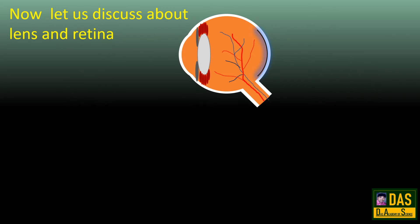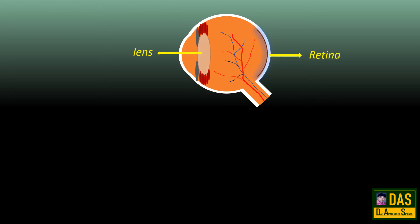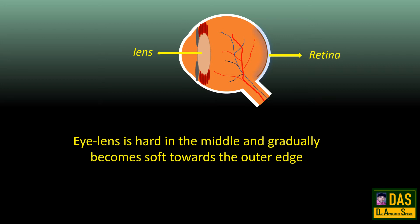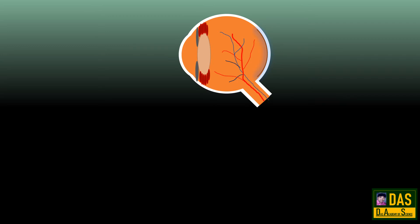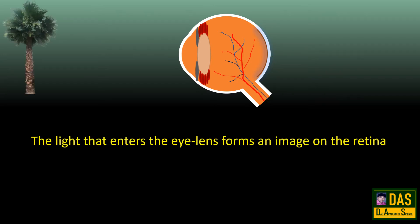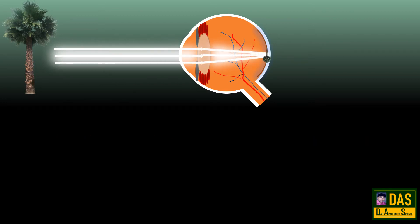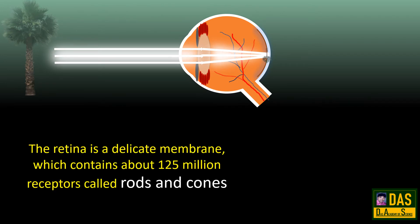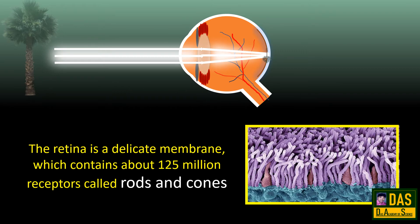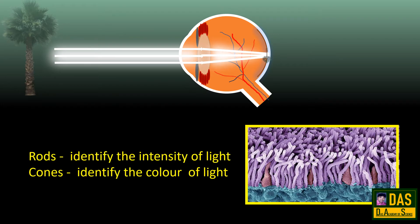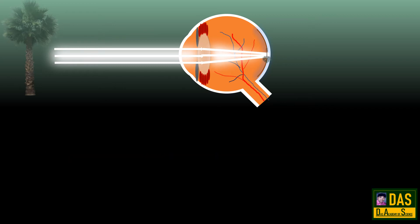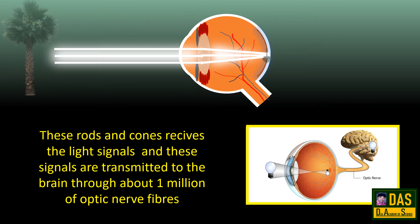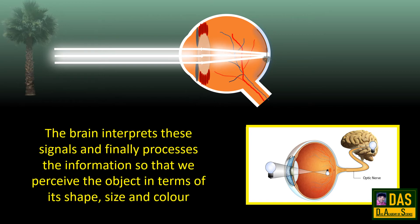Now let us discuss the lens and retina. The eye lens is hard in the middle and gradually becomes soft towards the outer edge. The light that enters the eye lens forms an image on the retina. Since the eye lens is convex, it forms a real and inverted image on the retina. The retina is a delicate membrane containing about 125 million receptors called rods and cones. Rods identify the intensity of light and cones identify the color of light. These signals are transmitted to the brain through about 1 million optic nerve fibers, and the brain processes the information so that we perceive the object in terms of its shape, size, and color.